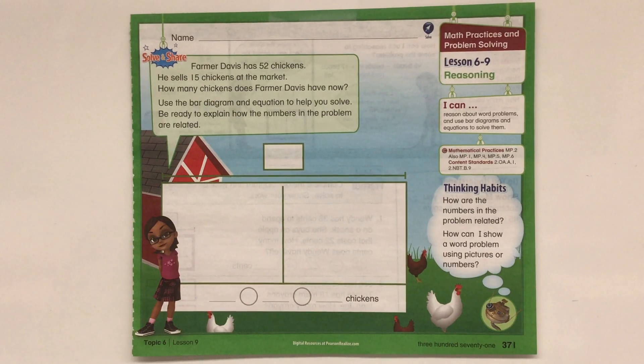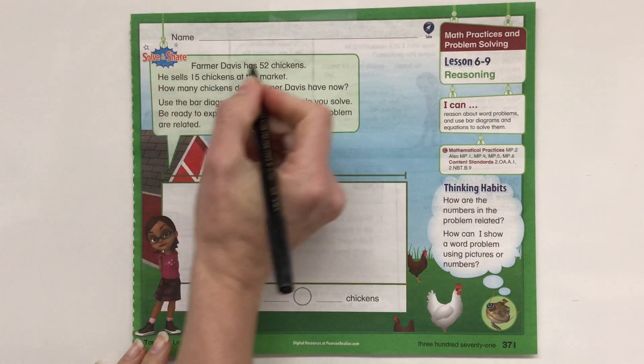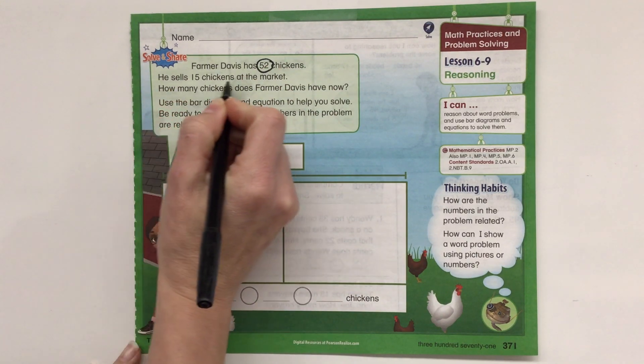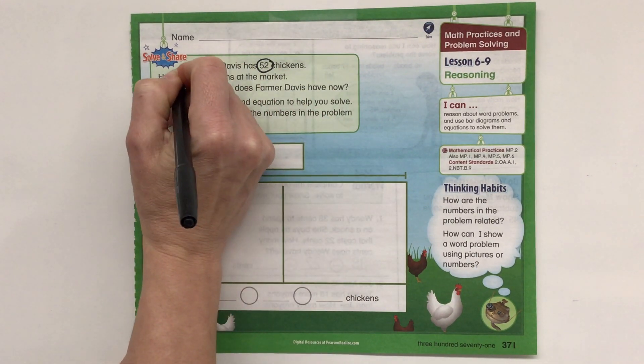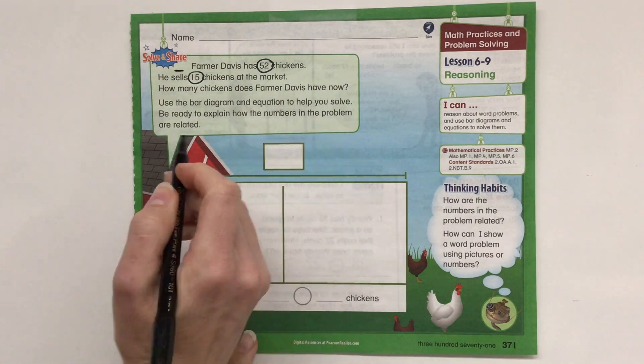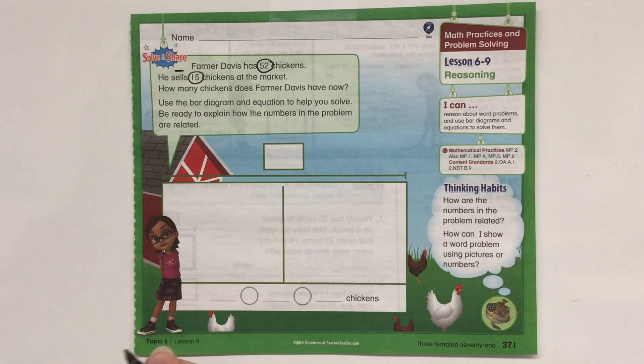All right, this is second grade math lesson 6-9 about reasoning. So let's take a look here. Farmer Davis has 52 chickens. He sells 15 chickens at the market. So he's selling, we know we're going to subtract, we're going to have less. How many chickens does Farmer Davis have now? Use the bar diagram and equation to help you solve.